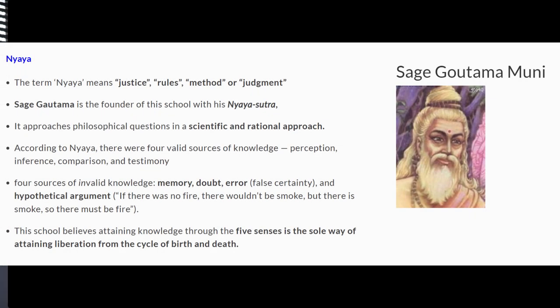Then comes Nyaya, which is based on logic. Gautama was the sage associated with the Nyaya school of philosophy. Nyaya propounds a scientific and rational approach and tells us that there are six ways to attain knowledge: through perception, through inference, through comparison or analogy, through postulation or derivation, through negative proof, and through testimony.